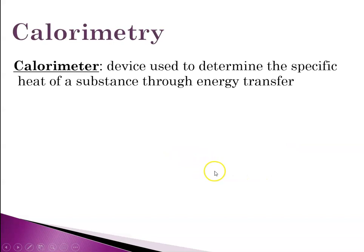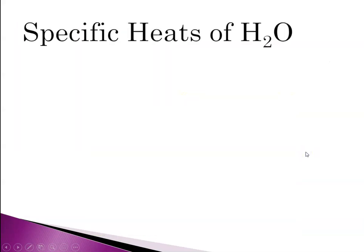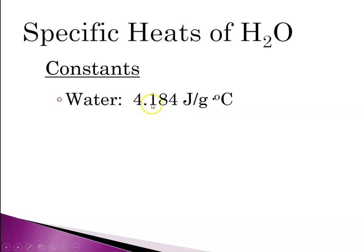A calorimeter is the device used to determine the specific heat of a substance through energy transfer. For our lab purposes, we might use just a beaker with a styrofoam cup set inside it, giving us an air insulator, then stir and measure the changes in temperature. It's also useful to note the specific heats of water. Water has different specific heat capacity depending on whether you're talking about liquid water, steam, or ice — and these are all constants.